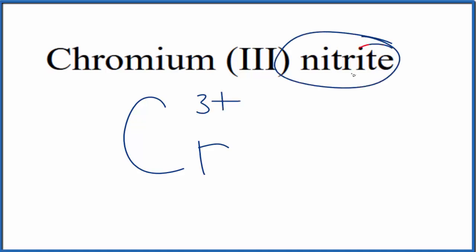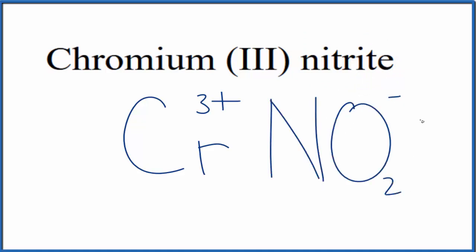For nitrite, when you see ITE, you won't find that on the periodic table. This is a polyatomic ion. So you either memorize that the nitrite ion is NO2 and it has a charge of 1-, or if you're allowed, you look it up on a table of polyatomic ions.